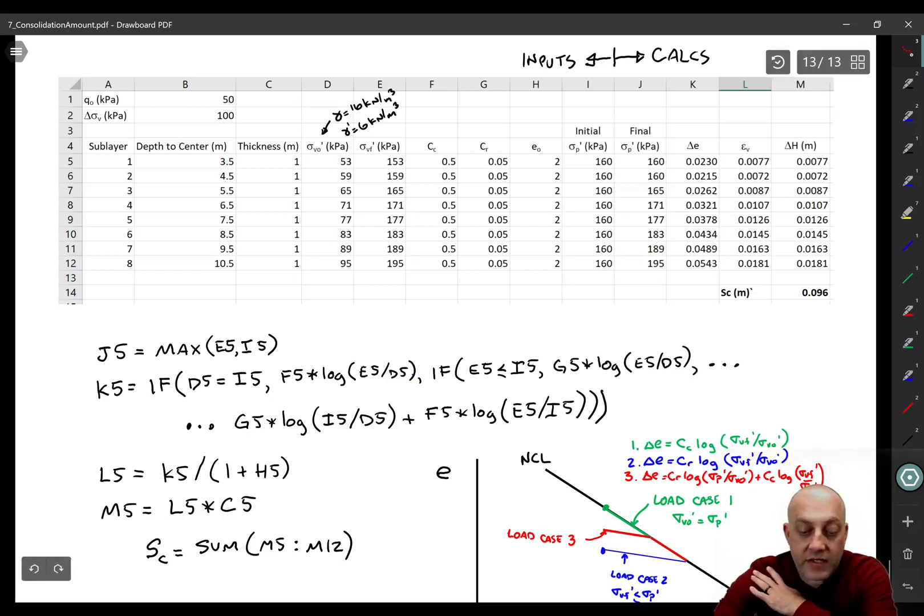And then L5 is epsilon V, which is delta E over 1 plus E naught. M5 is epsilon V times H, the sub layer thickness. And then consolidation settlement S of C is the sum of M5 to M12.